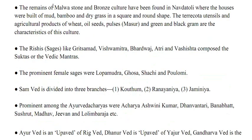The remains of Malwa stone and bronze culture have been found in Navadatoli, where houses were built of mud, bamboo and dry grass in square and round shapes. The terracotta utensils and agricultural products included wheat, oilseeds, pulses, masoor, and green and black gram — all characteristics of this culture.